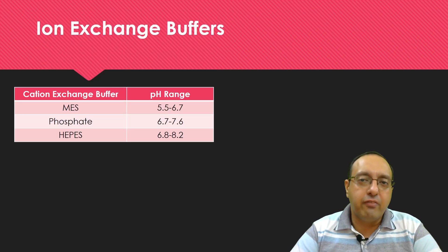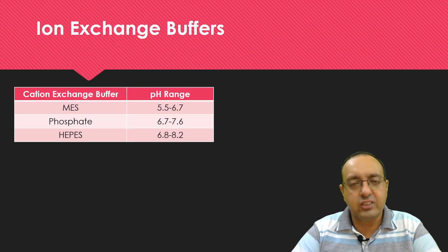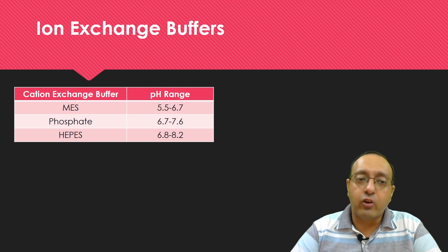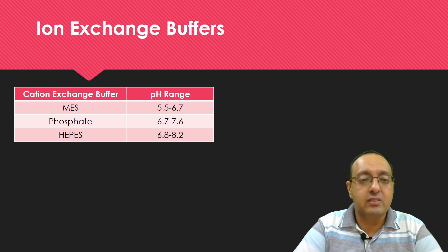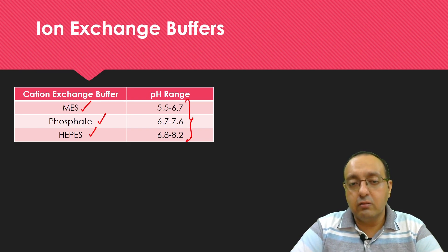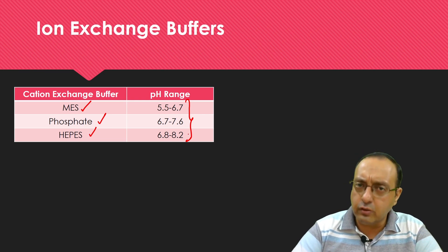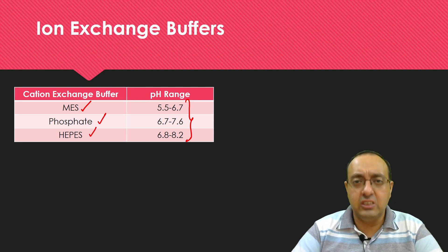Different types of ion exchange buffers are available for anion exchange as well as cation exchange. For example, for cation exchange buffer we have buffers like MES, phosphate, and HEPES which are active over different pH ranges. There are lots of other ones. Usually the companies like Biorad, Sigma Aldrich, and GE Healthcare have a list of different cation exchange buffers and anion exchange buffers, and they have very good competent help desks that will help you to optimize what kind of resins and what kind of buffers you need to be using.